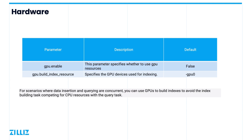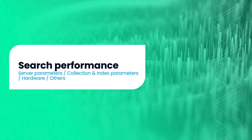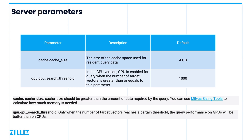Now that we have gone over insertion and indexing performance, let's move on to the most important factor: query performance. When searching, if you find that the query is very slow, the first thing you need to check is the parameter cache.cacheSize in the server.config.yaml file. This parameter refers to the size of the cache space used for resident query data, with a default value of 4GB. If the cache space is insufficient to hold the required data, the data will be temporarily loaded from disk during the query, which hurts query performance. Therefore, the cache size parameter should be greater than the amount of data required by the query.